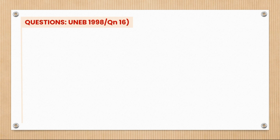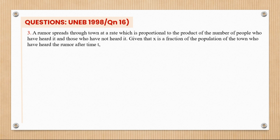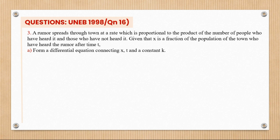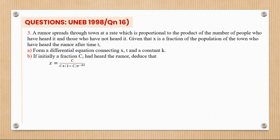The next question is from UNAB 1998, question 16. A rumor spreads through a town at a rate proportional to the product of the number who have had it and those who have not. Given x is the fraction who have heard the rumor after time t, we must form a differential equation connecting x, t, and constant k. If initially a fraction C had heard the rumor, deduce the formula for x.